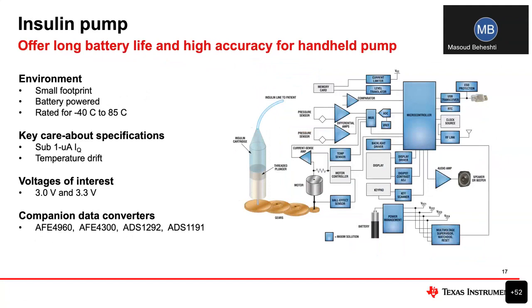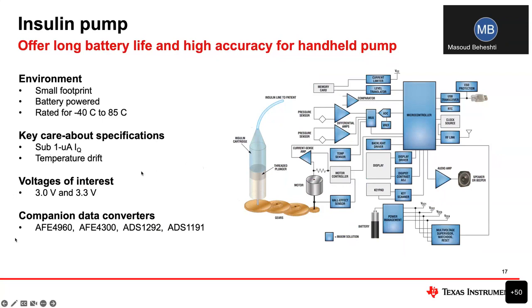Insulin pump is another medical application. You're looking for small footprint — these are typically battery operated and rated for a wider temperature range depending on where the patient is using it. A sub-1 microamp quiescent current is very critical to maximize battery life, and temperature drift is also a key spec designers care about here. Common voltages are 3 and 3.3 volts, used with ADCs such as the AFE4960, 4300, ADS1292, and ADS1191. REF35 pairs well with those devices.